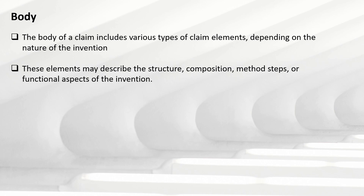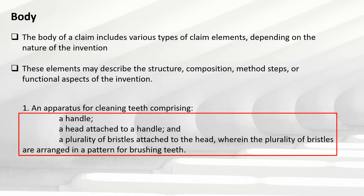The body of a claim includes various types of elements depending on the nature of the invention. In the toothbrush example, the body — shown in the red box — includes: a handle, a head attached to the handle, and a plurality of bristles attached to the head, wherein the bristles are arranged in a pattern for brushing teeth. These elements are the body. In the case of a process or method claim, there will be steps rather than elements, and those steps come under the body part.